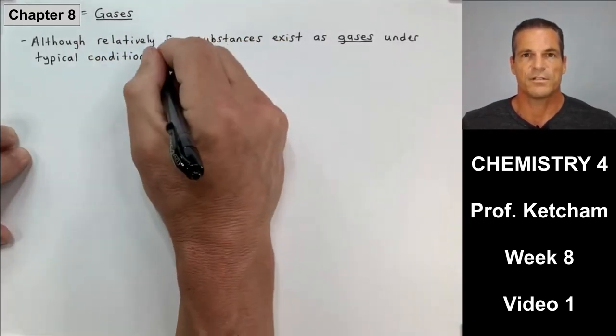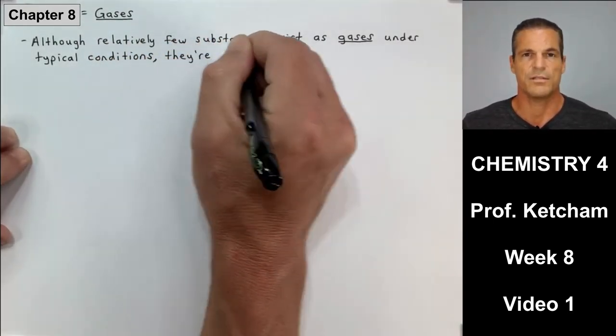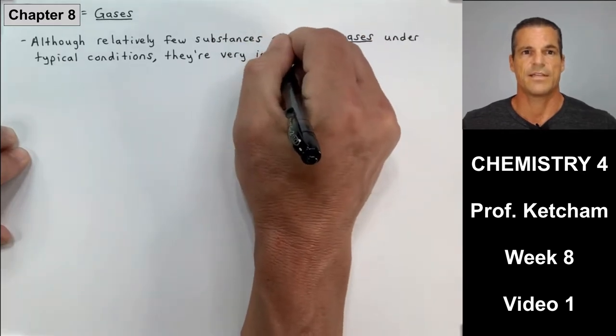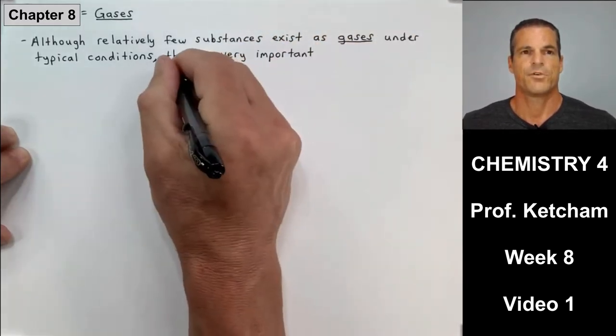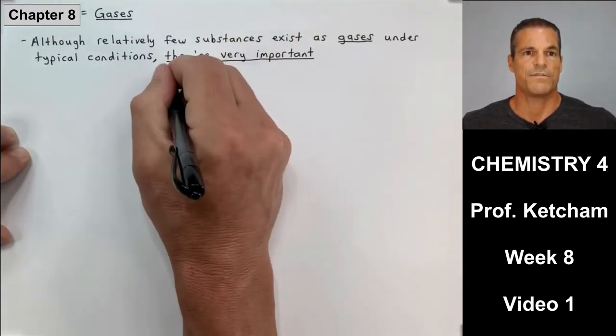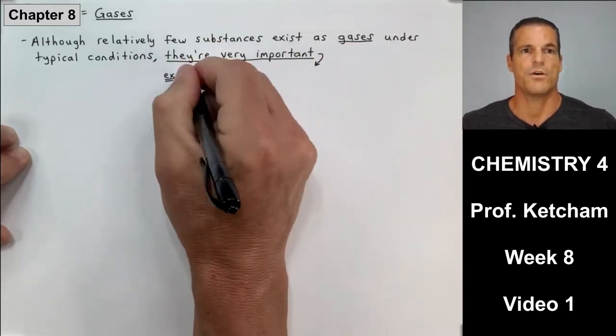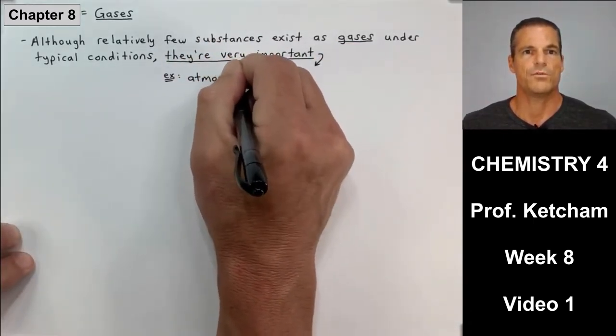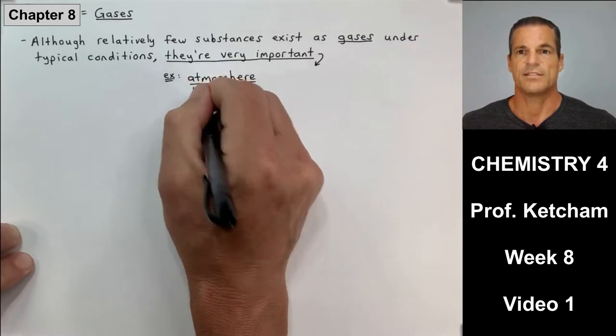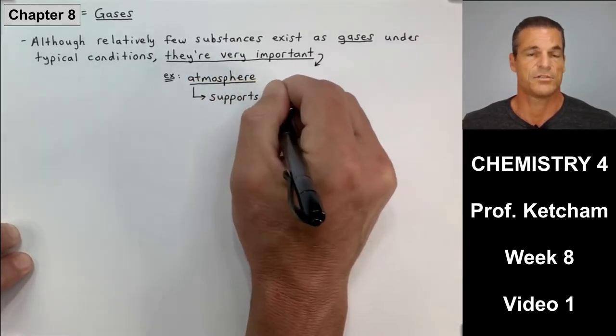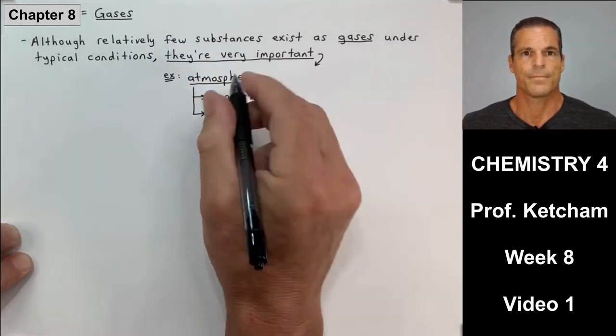So first things first, let's just get started on page 1 of section 5, gases. The first bullet point on page 1 of our notes today says, although relatively few substances exist as gases under typical conditions, they're very important.